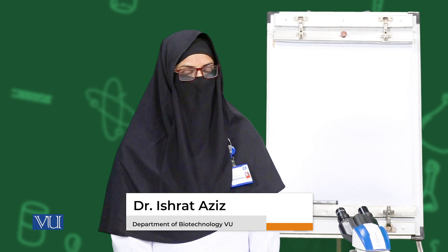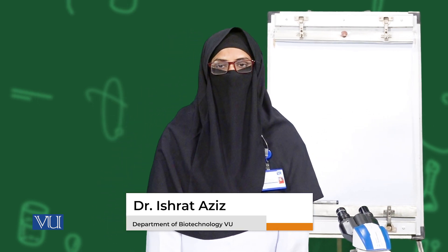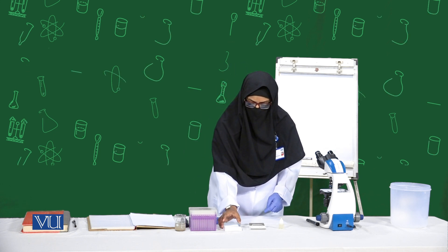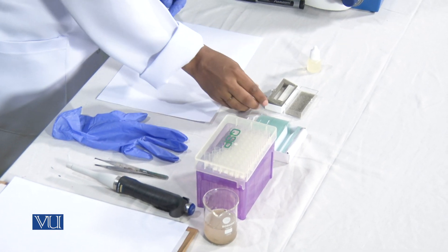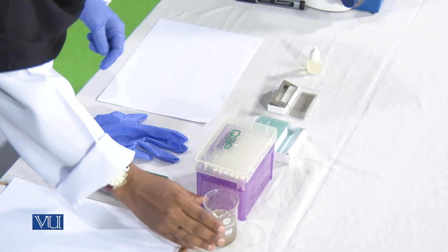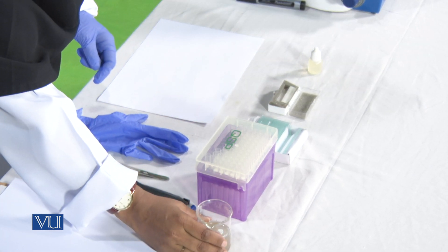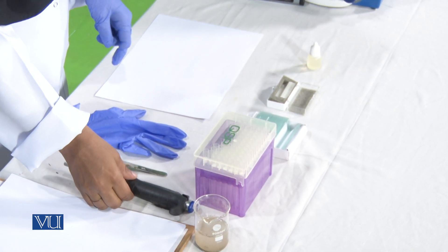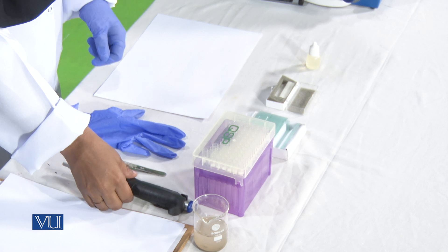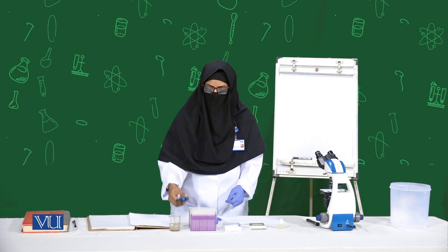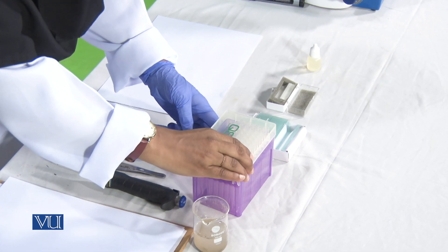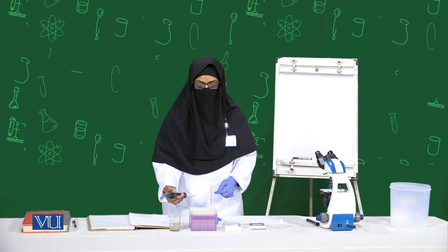In wet mount we have to prepare a slide, and the material required for this includes slides, cover slips, the specimen which is in the form of pond water, and for taking the specimen, a dropper could be used. But here for proper measurement we are using a pipette and tips. Now the procedure.